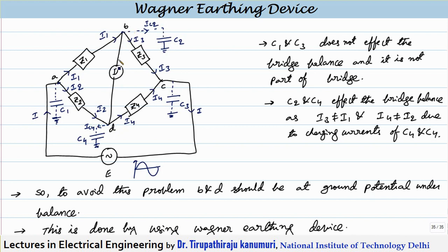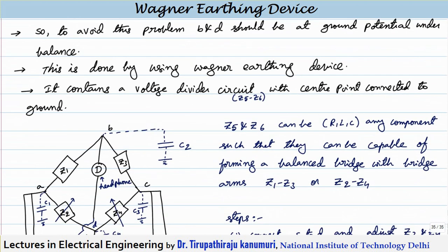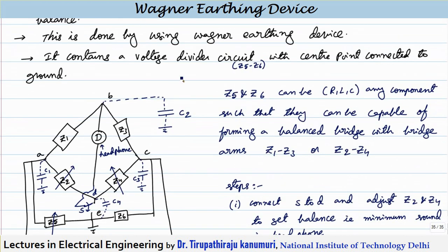If potentials B and D are at the ground potential, then these currents are 0. So obviously whatever current I1 is coming will be equal to I3, and whatever current I2 is coming will be equal to I4. This problem can be avoided by making the potentials of B and D as nearly equal to the ground as possible, so that these currents are very small and the error introduced will be minimum in the circuit. In order to maintain B and D at the ground or earth potential, we use the Wagner earthing device.